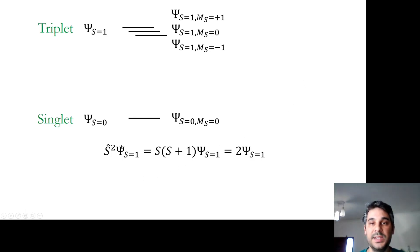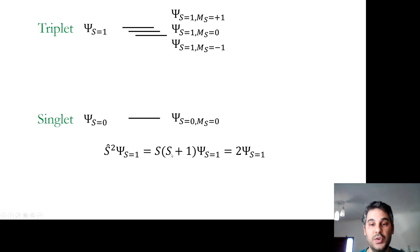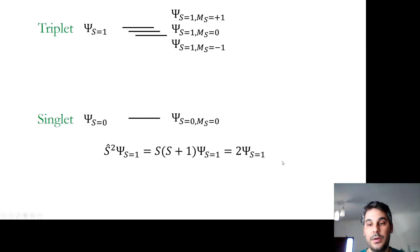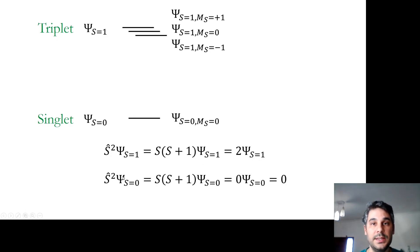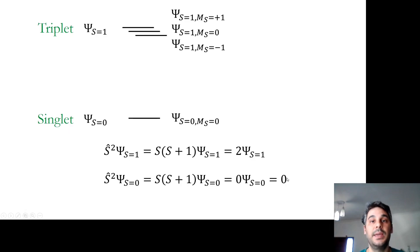What makes a function a singlet or a triplet is that if we apply the S² operator — the square of the total spin operator — on a triplet state wave function, we obtain the same wave function multiplied by S(S+1). For S equal to 1, this number is 2. So a triplet is an eigenfunction of S². Similarly, applying S² to a singlet wave function yields the same wave function multiplied by 0, so the singlet is also an eigenfunction with eigenvalue 0.